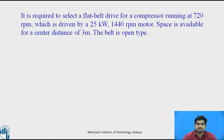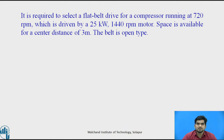By referring this problem statement, we have to select the proper type of belt which will run without failure. It is required to select a flat belt drive for a compressor running at 720 rpm, driven by a 25 kilowatt motor having a speed of 1440 rpm. The space available for a central distance is 3 meters, and the belt is open type.